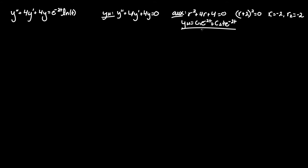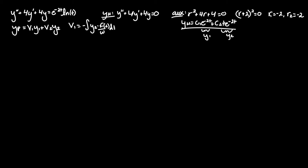We need these two terms — y₁ and y₂ — to find our particular solution y_p = v₁y₁ + v₂y₂. We'll use the Wronskian approach since it's faster than systems of equations. So v₁ = -∫(y₂·f(t) / W) dt, and v₂ = +∫(y₁·f(t) / W) dt, where f(t) is the right-hand side.